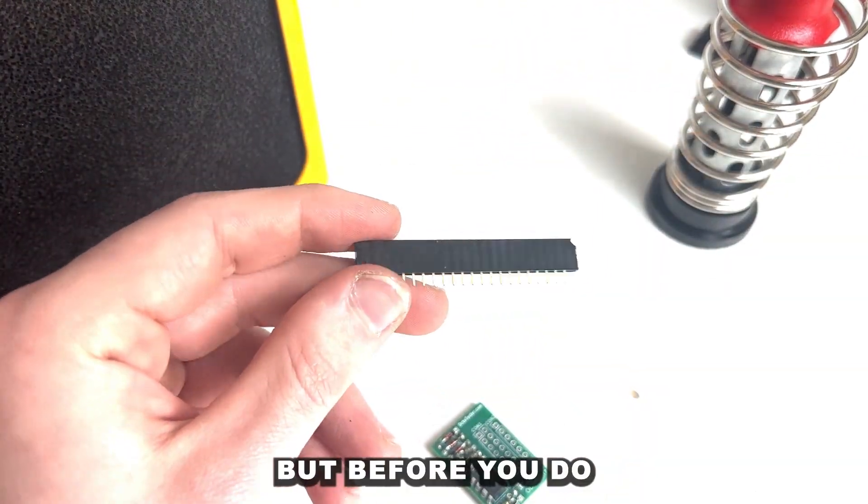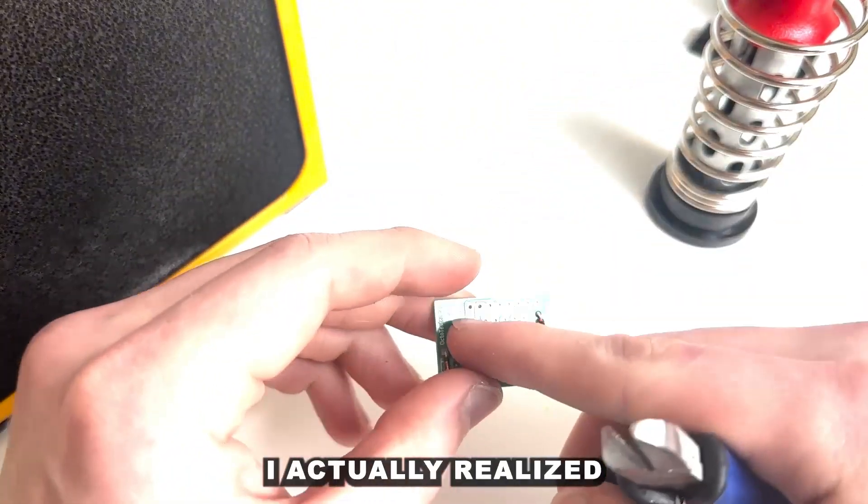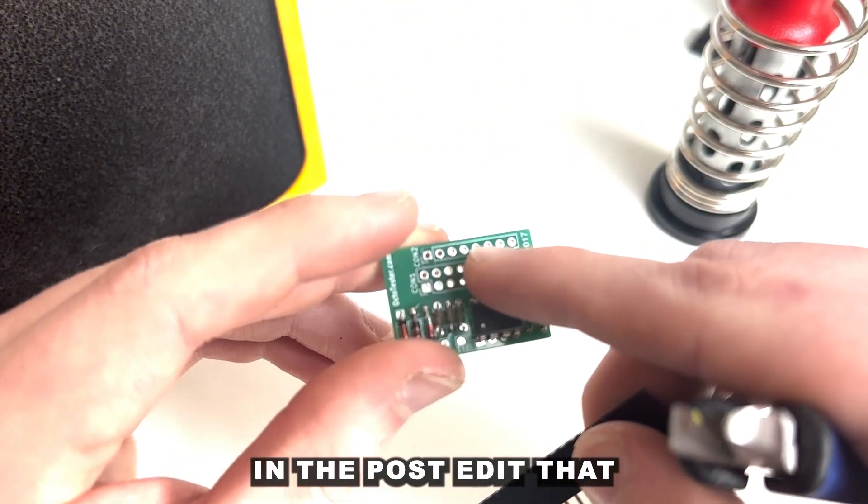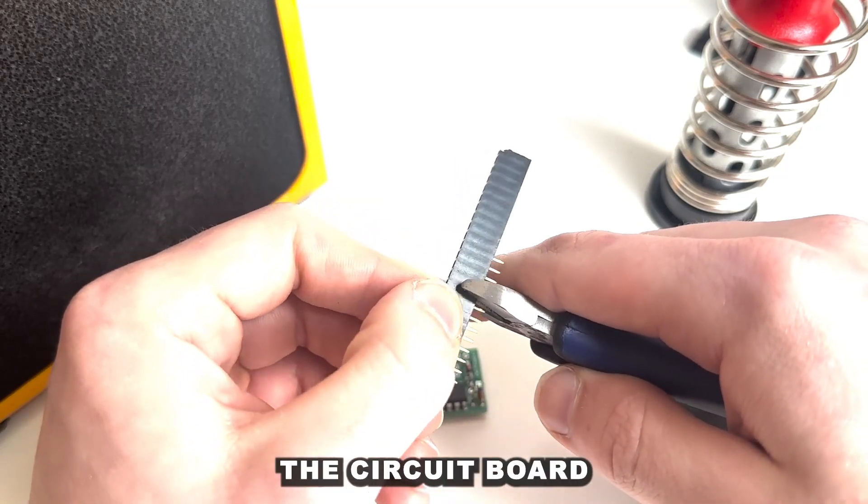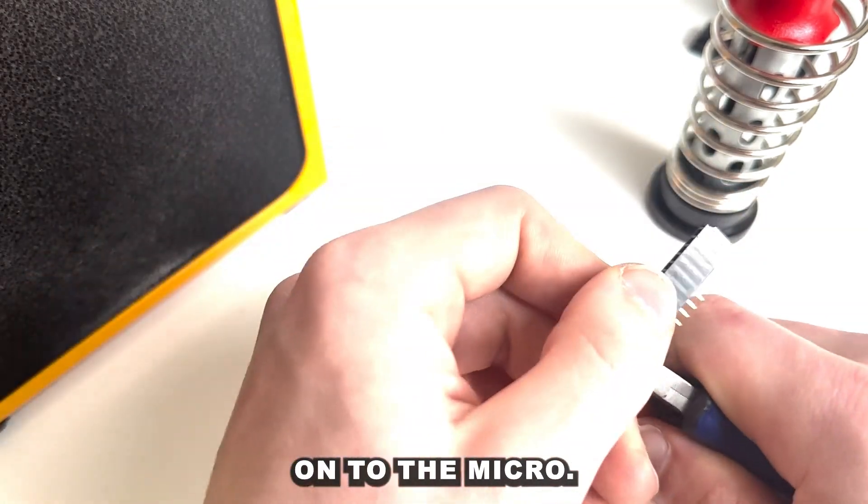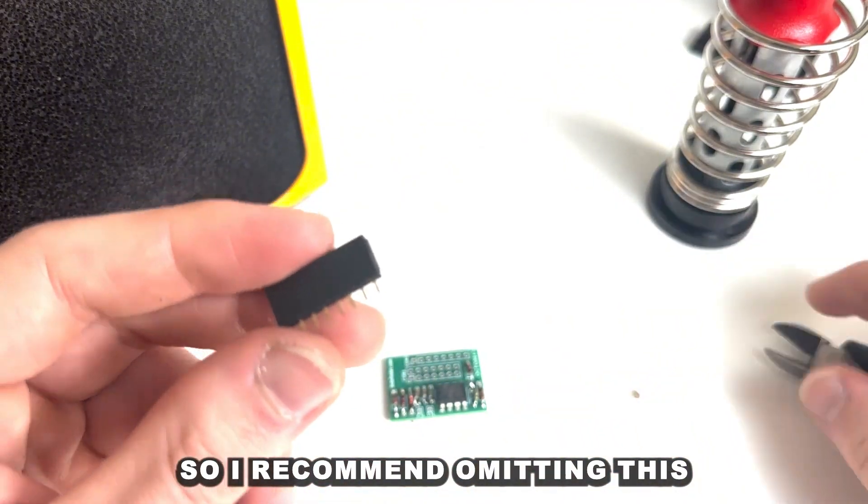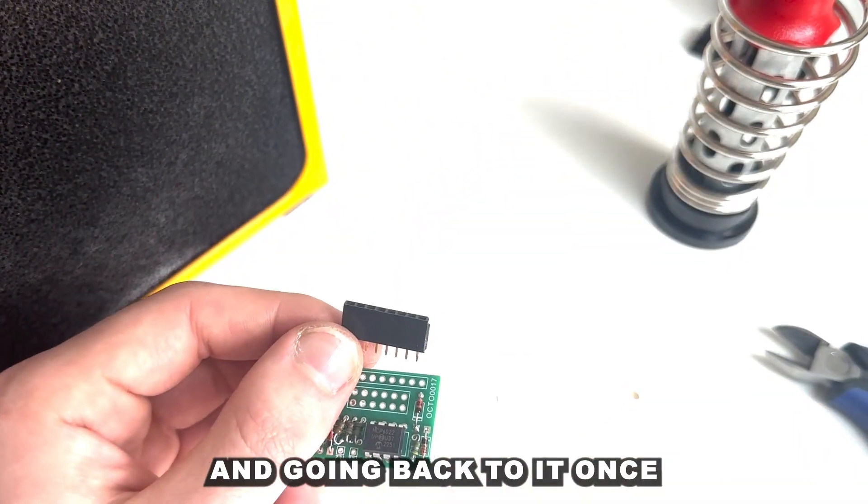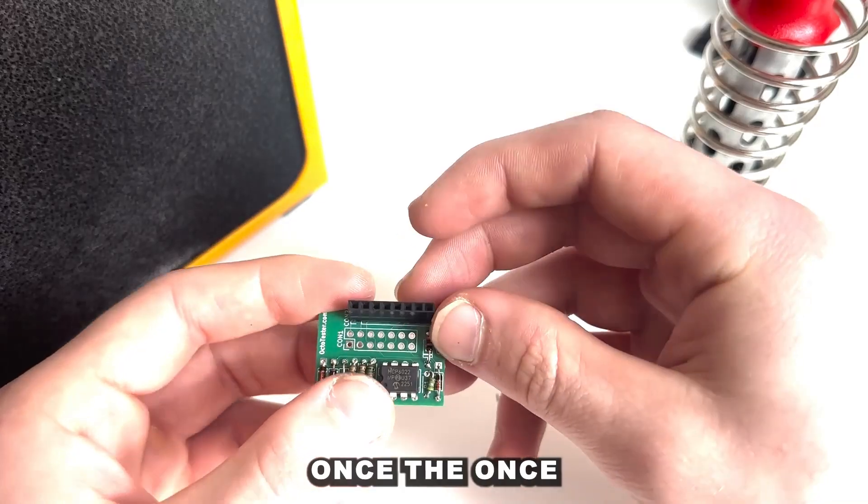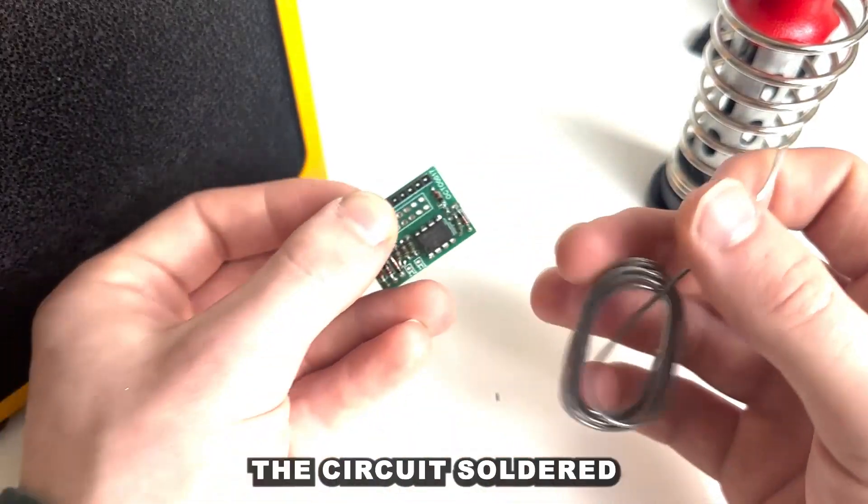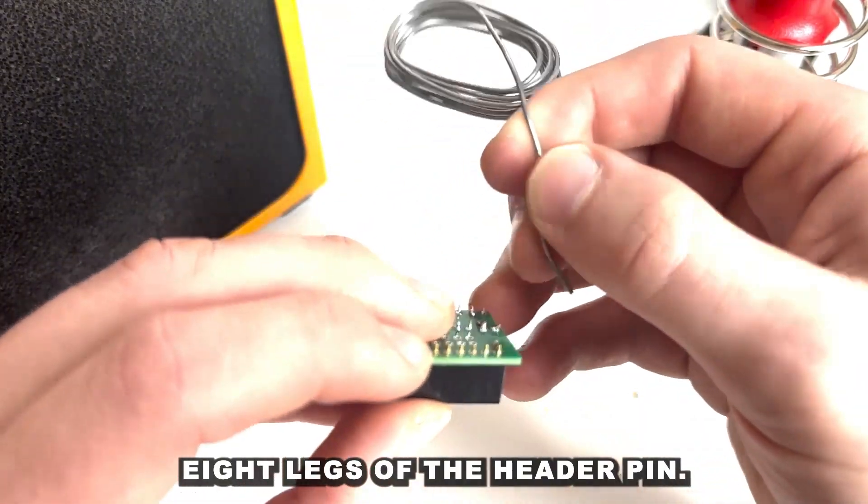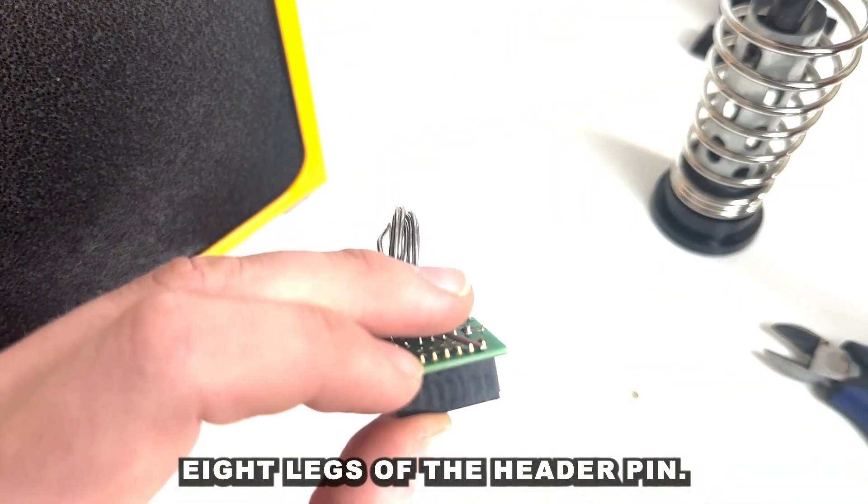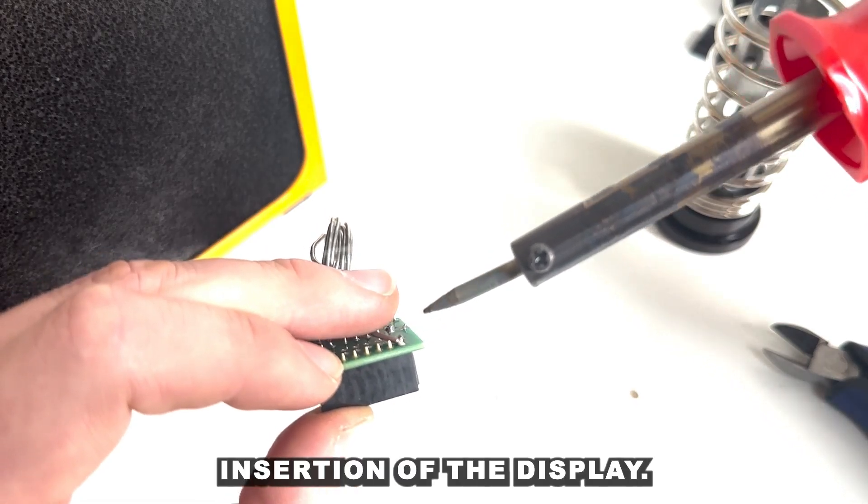Next we're going to solder the header pins but before you do I actually realised in the post-edit that it's better to do this once you've soldered the circuit board onto the micro. So I recommend omitting this for now and coming back to it once the circuit is soldered onto the microcontroller. Anyway cut yourself eight legs of the header pin and this will be for the insertion of the display.